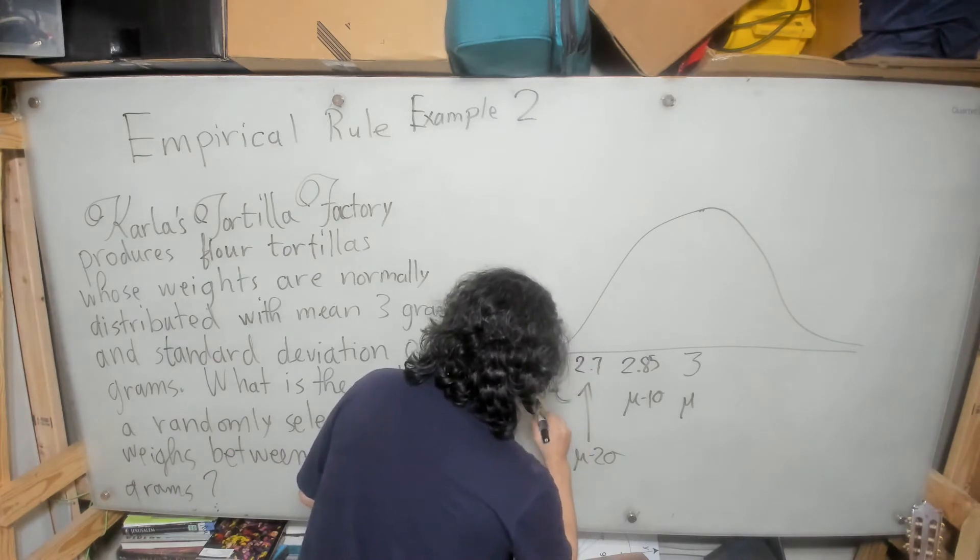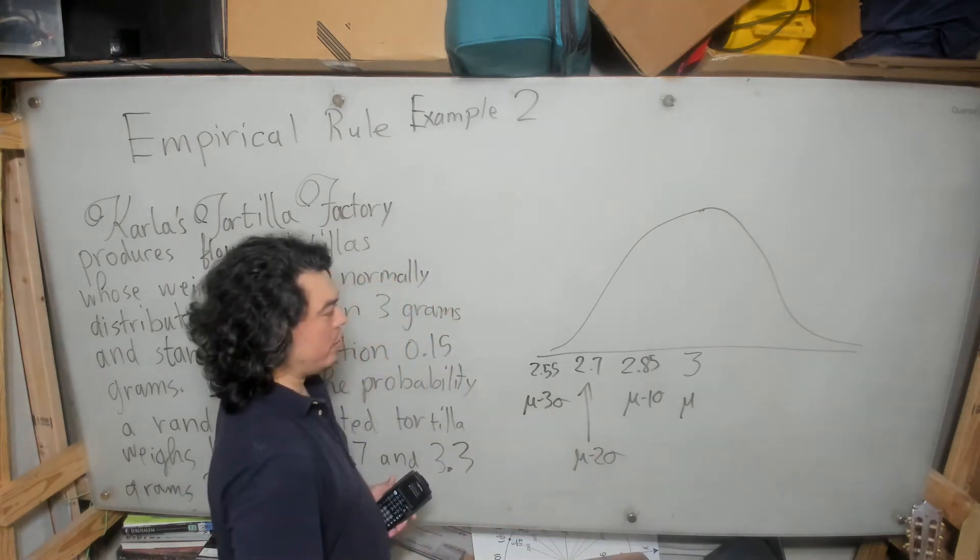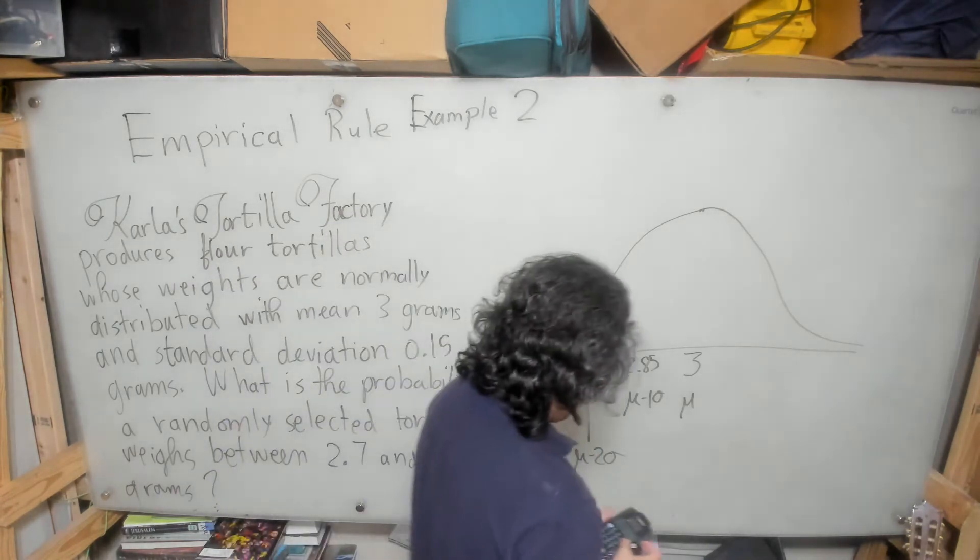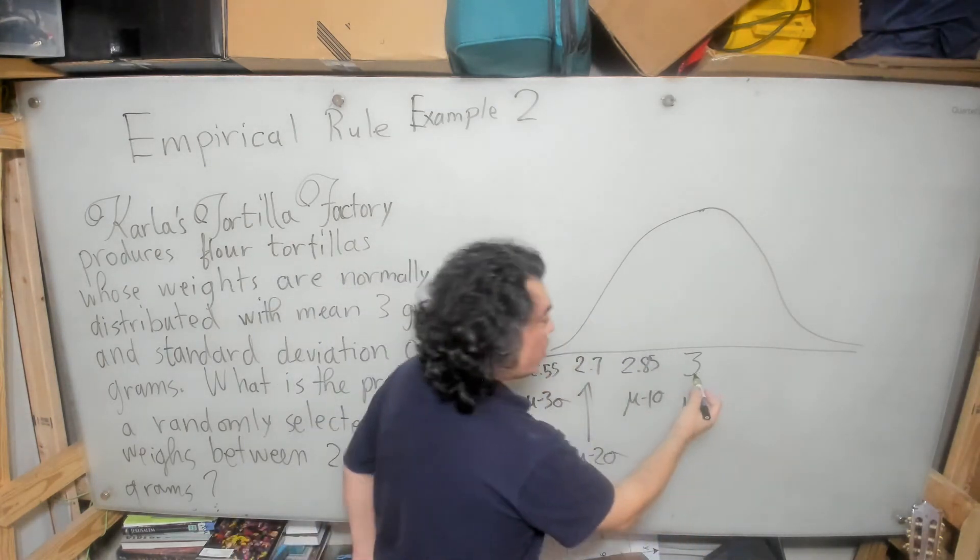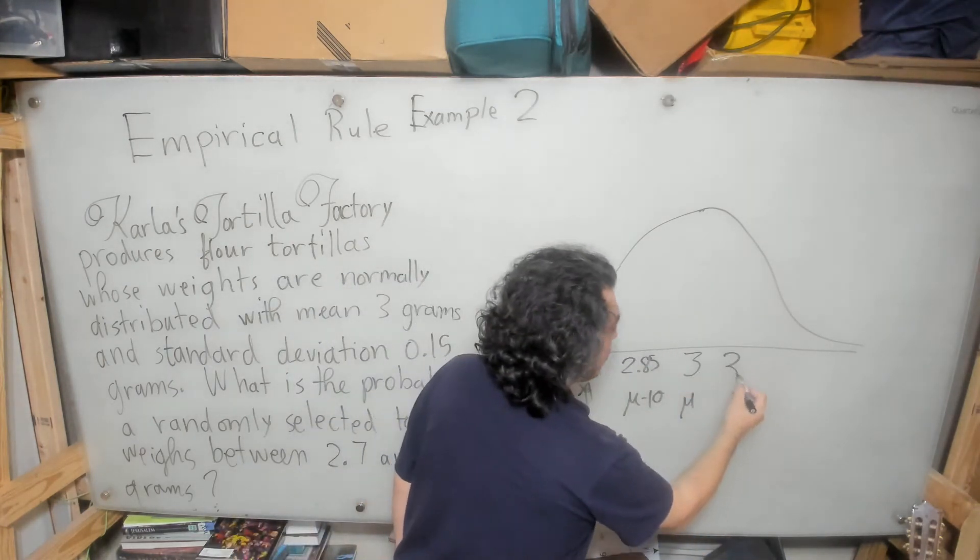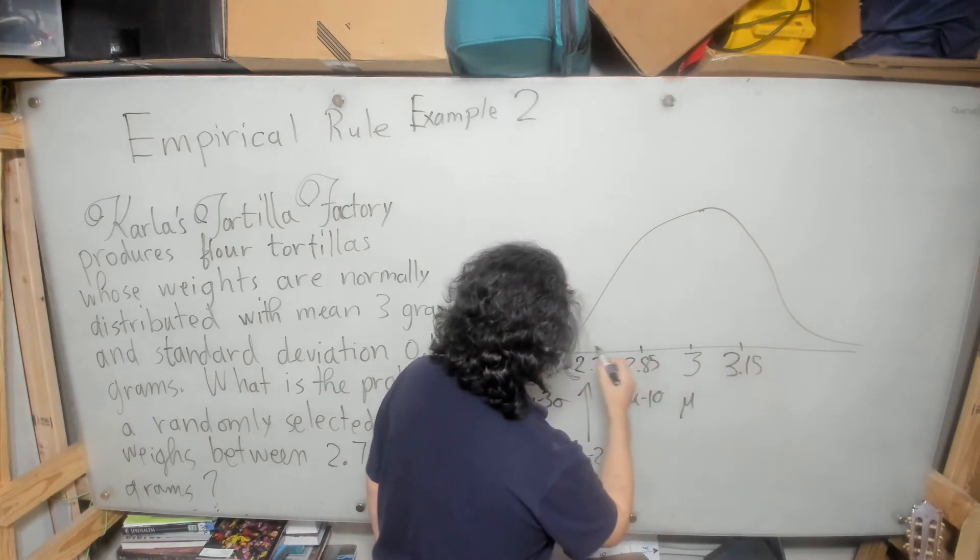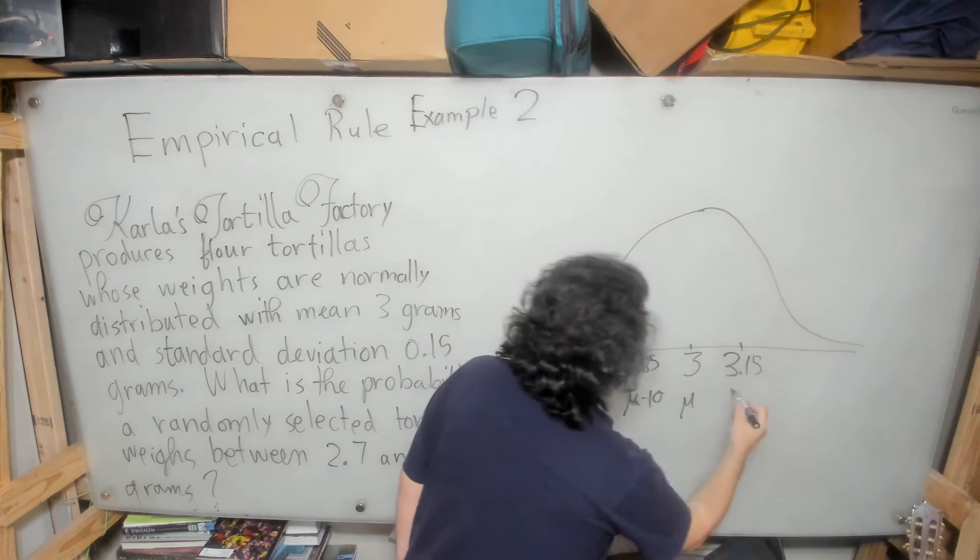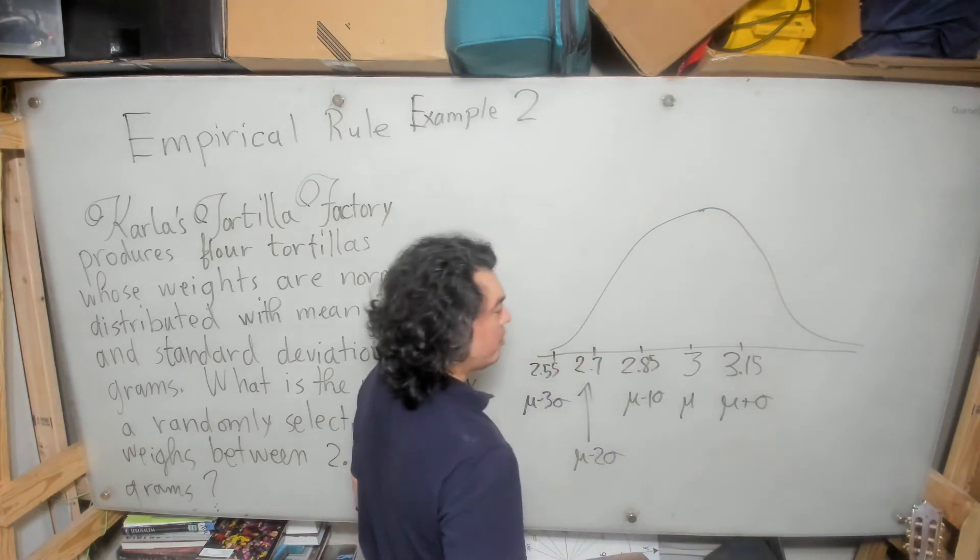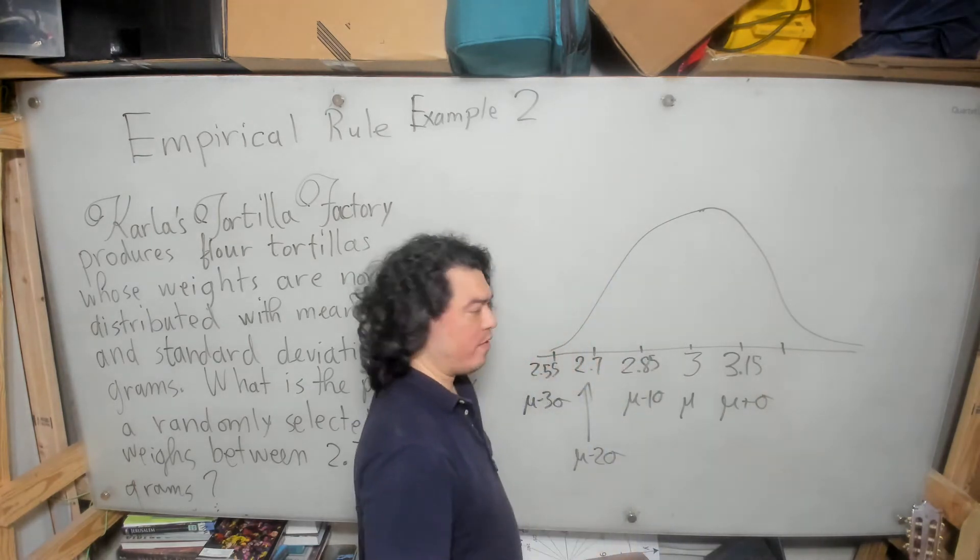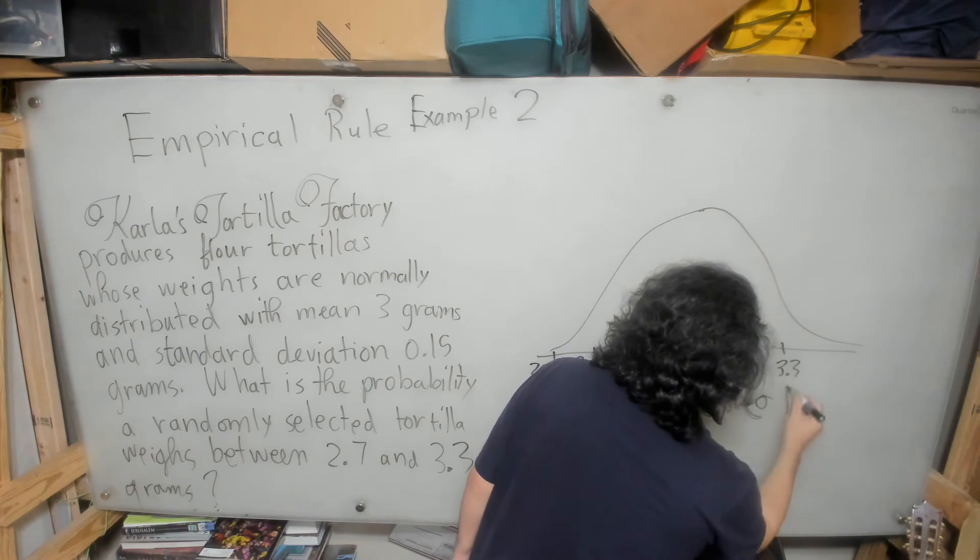And then I can subtract a standard deviation again and I get 2.55. And that is, of course, the mean minus 3 standard deviations. Now I can also add the standard deviation. So 3 plus 0.15, that would be 3.15. That would be the mean plus 1 standard deviation. If I add 0.15 again, I'm going to get 3.3. And that, of course, corresponds to the mean plus 2 standard deviations.